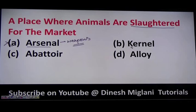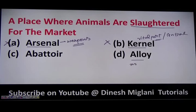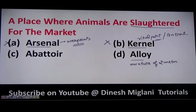The second option is kernel, which means vital part or central part — not the answer. Third is alloy, which means a mixture of two metals. When two metals are mixed, the resulting substance is called an alloy — also not the answer.